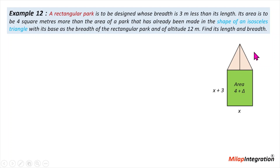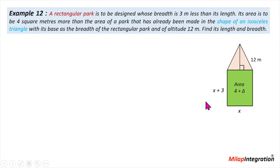If we draw the vertical height, it will always be at 90 degrees, and this is called the altitude at 12 meters. Now if this figure is drawn properly, we need to find the length and breadth.